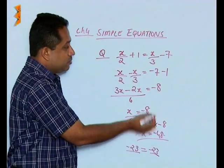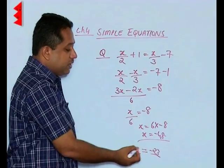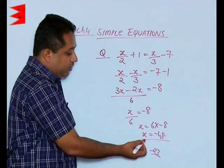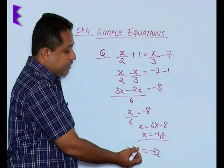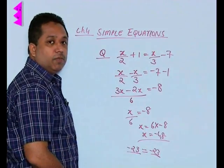We substituted the value of x in LHS and RHS, and we find both of them are equal. When both are equal, we can say our solution is correct. So x = -48.